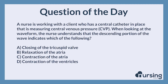A nurse is working with a client who has a central catheter in place that is measuring central venous pressure, CVP. When looking at the waveform, the nurse understands that the descending portion of the wave indicates which of the following? A. Closing of the tricuspid valve. B. Relaxation of the atria. C. Contraction of the atria. D. Contraction of the ventricles.